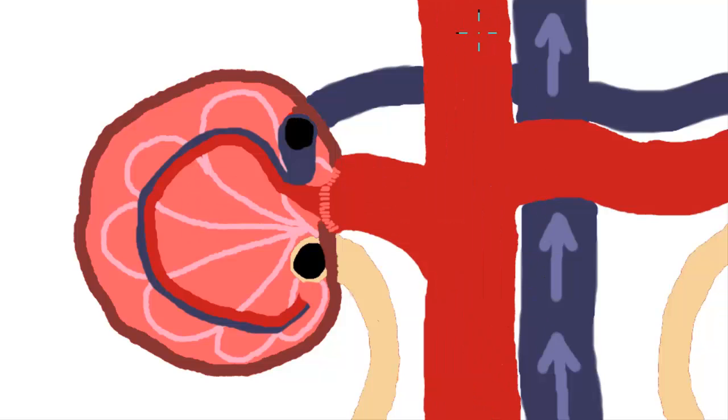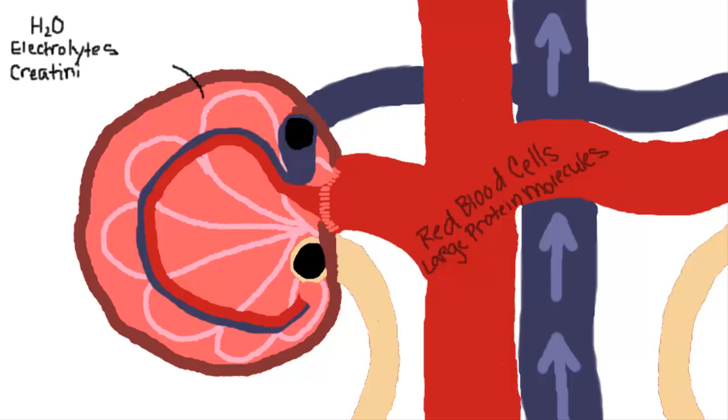Let's take a closer look at the filtration system. Blood flows into the individual nephrons, the little units of the kidney. In here there's a filter. Everything except red blood cells and large protein molecules fits through this filter—basically water, electrolytes, and waste products from protein metabolism, which are creatinine and urea.